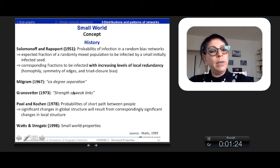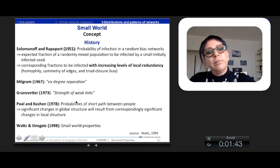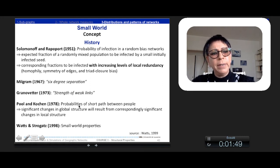Granovetter, showing the strength of the weak ties or weak links between the groups, took into account the two properties, the fact that we have some groups and the fact that there are some linkage between these groups. And Paul and Koshin, in the 70s, but also they began their research quite earlier in the 60s, they showed that we can see that the probability of short paths between people change significantly in a global structure with some local structure. And so he showed also the relation between the two properties.